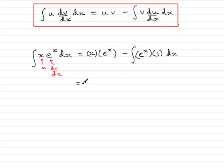Clean this up, and we have x e to the x, and then minus just simply the integral of e to the x with respect to x.